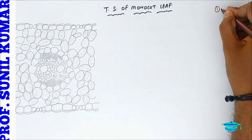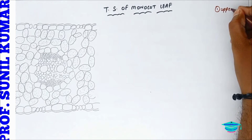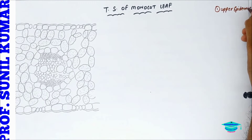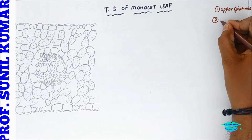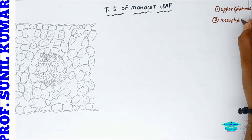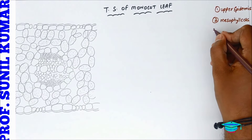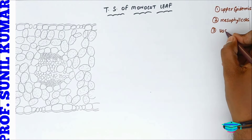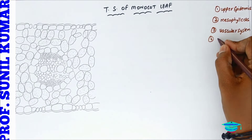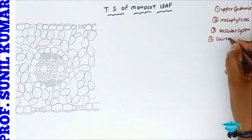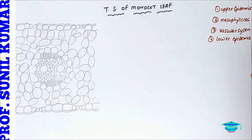First, there is something called upper epidermis. Second, what we have is the mesophyll cells. Third, we have the vascular tissue, or we can say vascular system. And the fourth one that we have is the lower epidermis. Now whenever we talk about the Monocot leaf, we need to understand its structure.